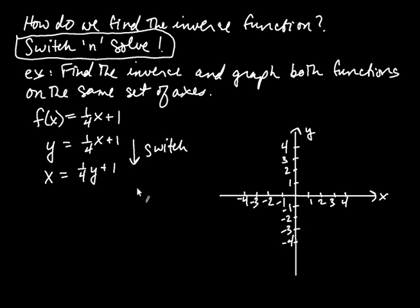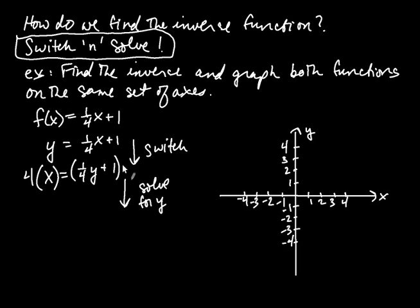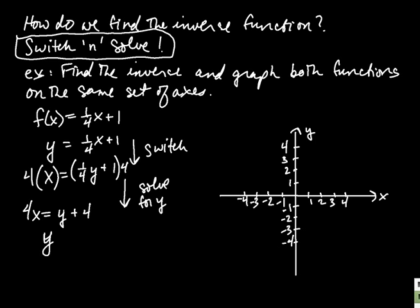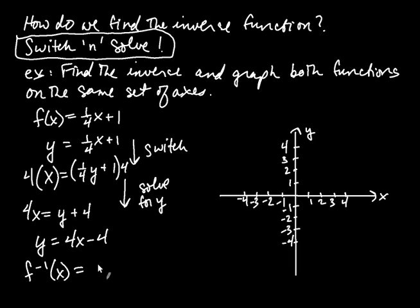Then you solve for the y in the equation you just created. To get this y isolated, I'm going to multiply both sides by 4, giving 4x equals y plus 4. Now subtract 4 from both sides: y equals 4x minus 4. This is your inverse function, but we usually replace the y with inverse notation and write f⁻¹(x) = 4x − 4.